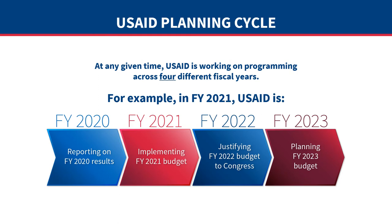USAID's 'What We Do' webpage provides links to help you research policies, strategies, and visions for the technical sectors relevant to your organization. As you research priorities and strategies, keep in mind that at any given time, USAID is working on programming across four different fiscal years — reporting on past results, implementing the current budget, justifying the next year's budget to Congress, and planning two years ahead. Country Development Cooperation Strategies sometimes span a couple of years, so you must respond immediately to some opportunities, while others may allow you to plan to apply in the coming year. Begin your research at least 6 to 12 months before you hope to apply for and receive a USAID award.